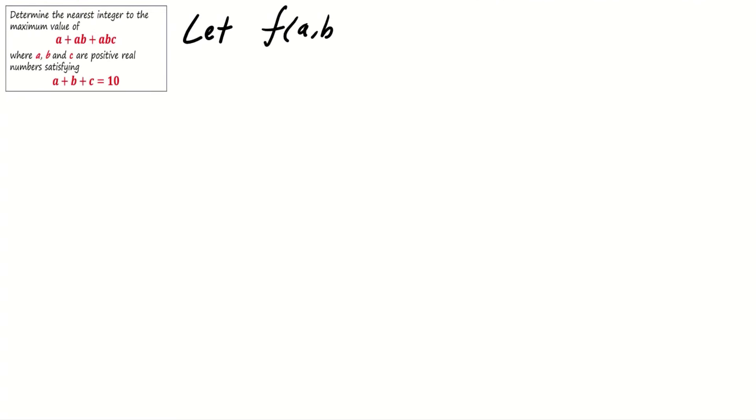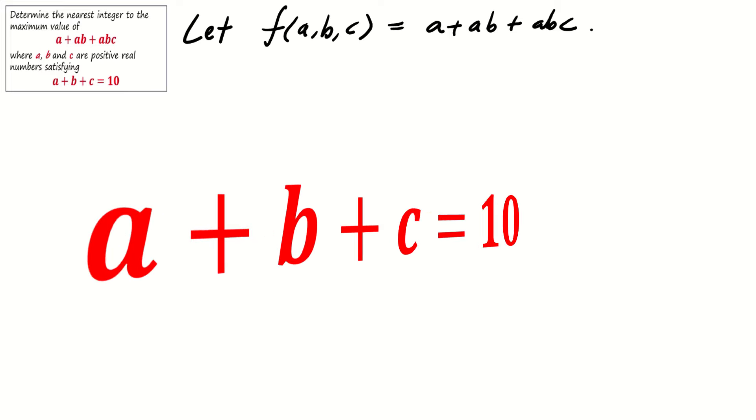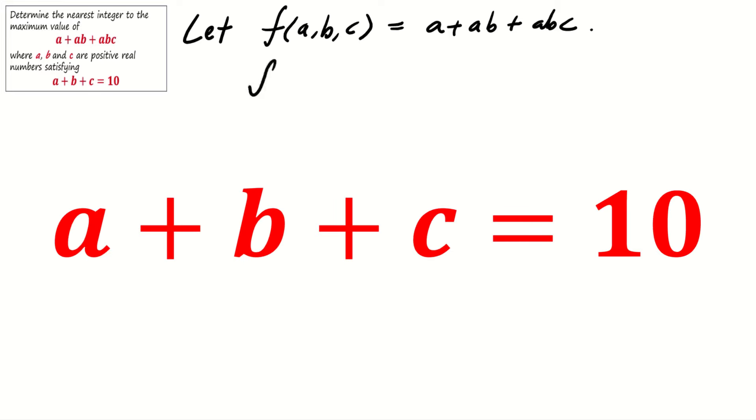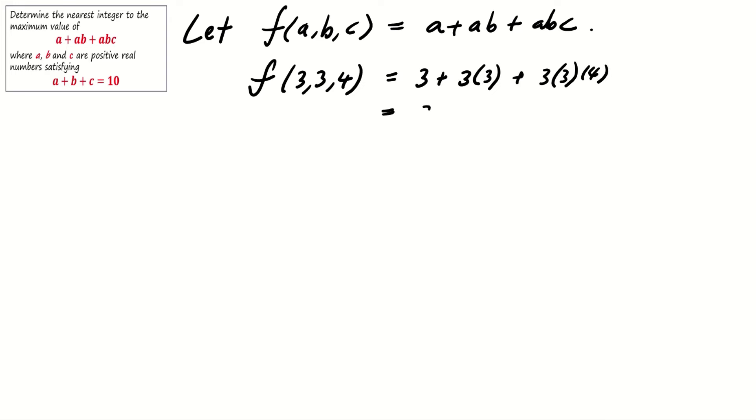Let's start with some clever trial and error. We define f(a,b,c) as a plus ab plus abc. With the sum of a, b, and c being 10, we might try a equals 3, b equals 3, and c equals 4, which gives us f equals 48.